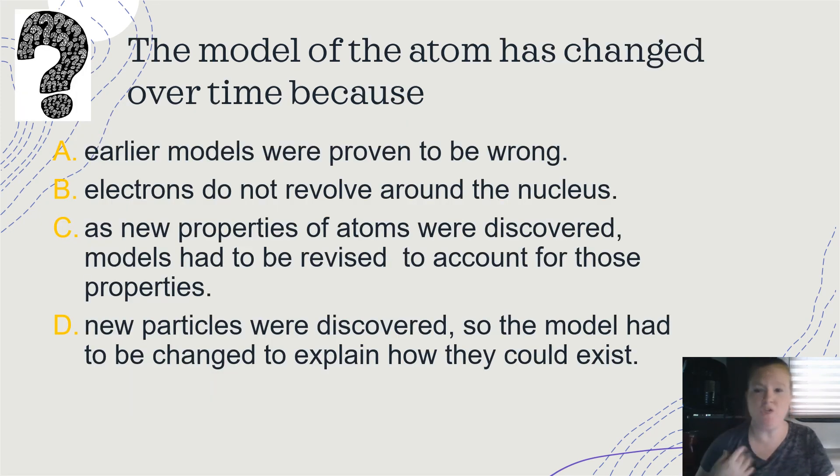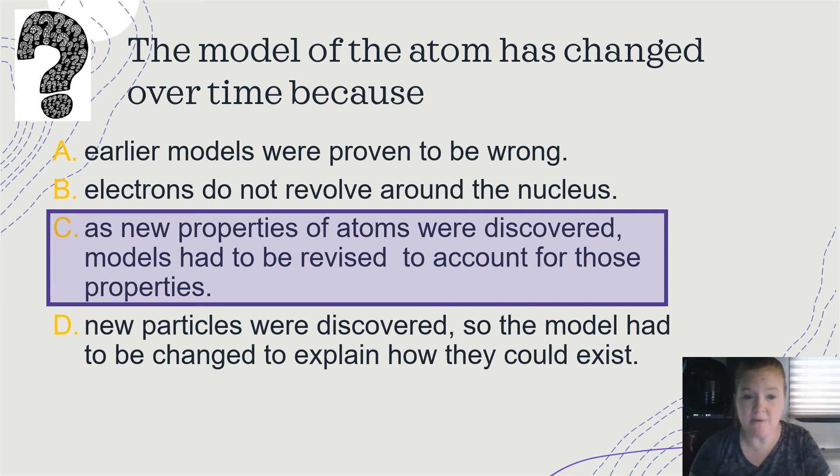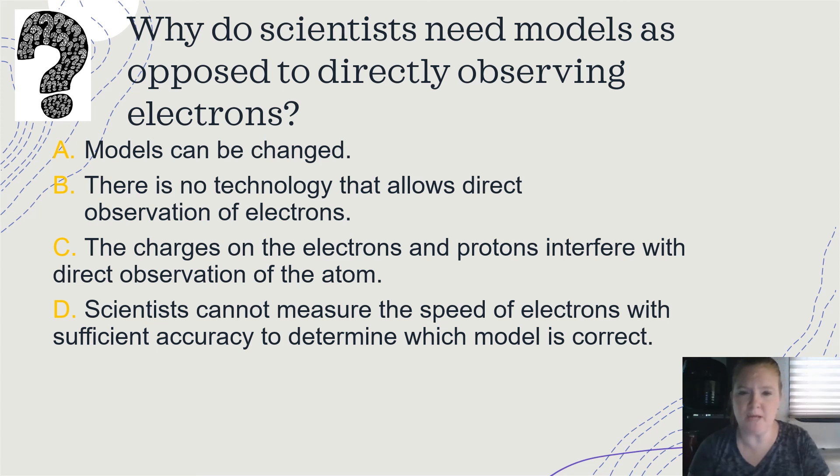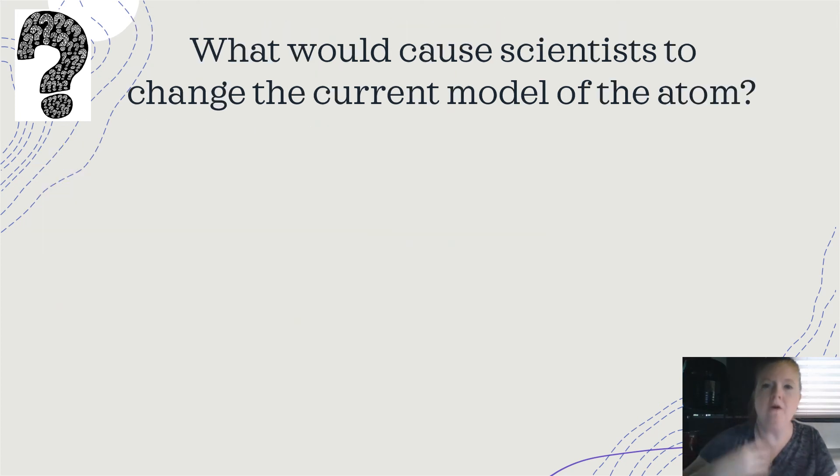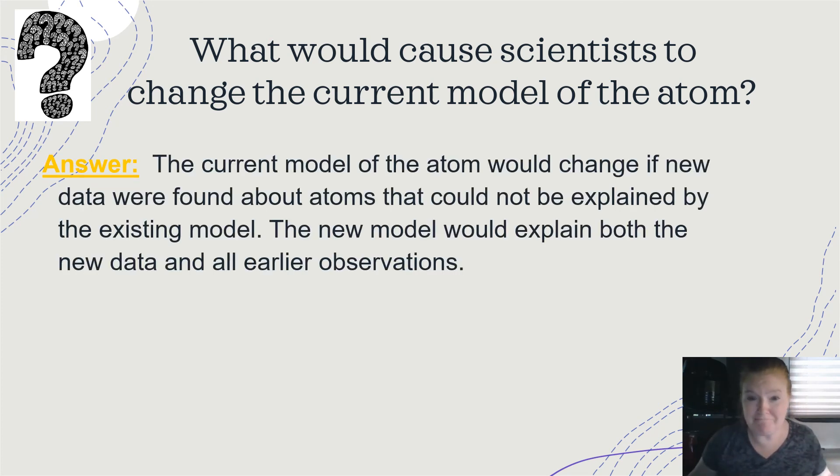The model of the atom has changed over time. Why? Pause it if you want to think about it. As new properties of atoms were discovered, models had to be revised to account for those properties. Why do scientists need models as opposed to directly observing electrons? So why can't we just be like, hey, let me check out some electrons? There is no technology that allows us to literally see an electron. What would cause scientists to change the current model of the atom? So we have the quantum mechanical model or the quantum model. What would make us change that model? So think about all the things that made us change it along the way. Well, new data, right? New experiments came up with something new. And the new data couldn't be explained within the confines of that model. So the new model would have to explain the new data and all the earlier observations and change it in such a way that it would fit.